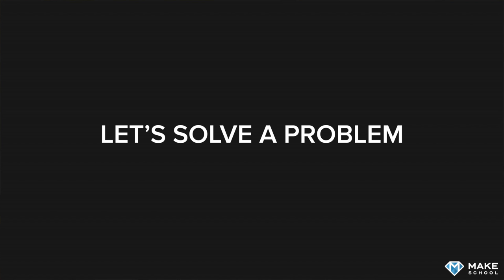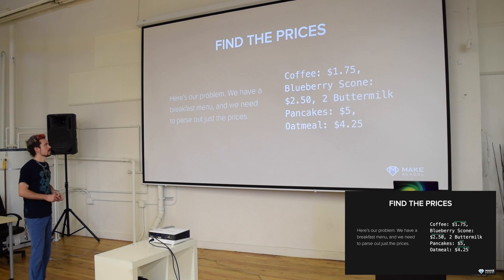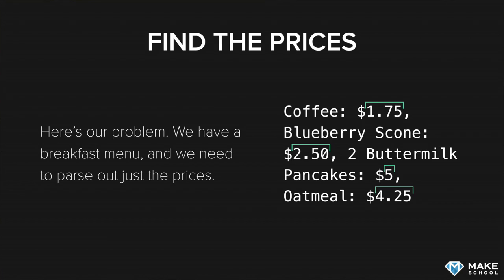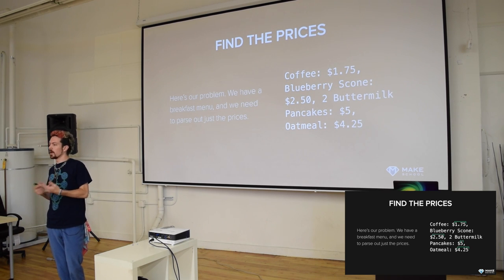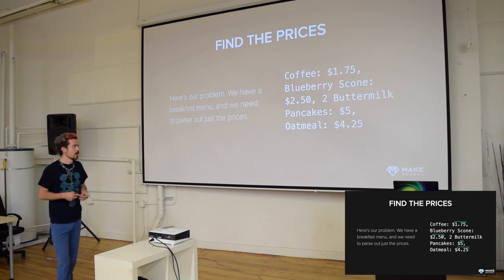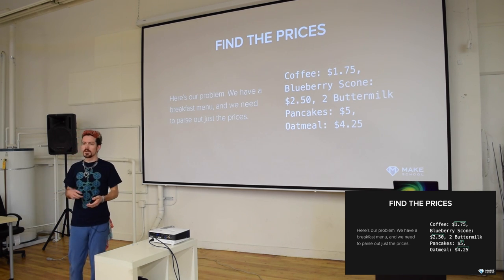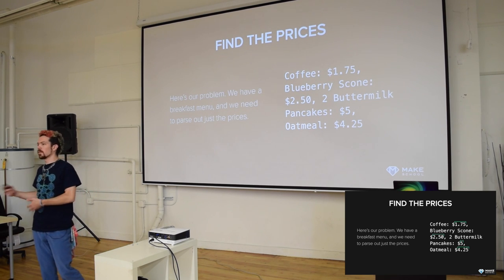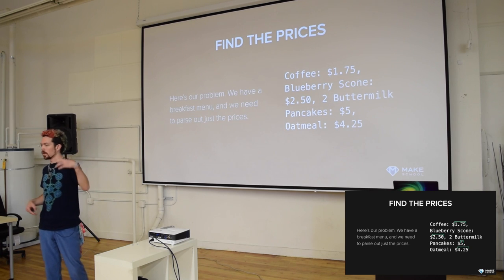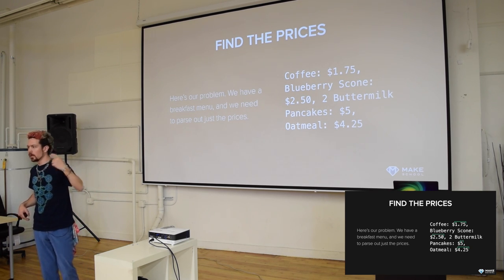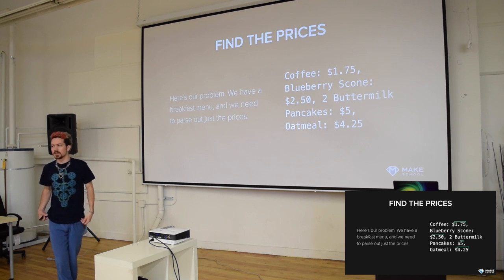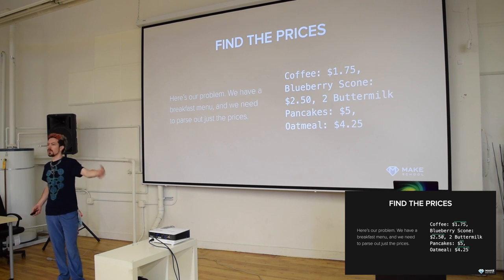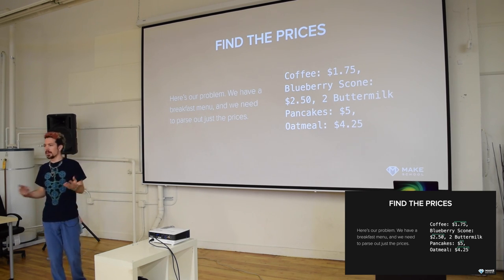Let's solve a practical problem with regular expressions: matching prices in a menu. A real-world example is a student in Sunnyvale who was building a restaurant voting application - not quite like Yelp, but for group selection. They had an API for some restaurant info but had to scrape HTML pages to get names and prices. You might not have an API for menu prices but you could visit a restaurant's website and grab the prices to stick in your app.